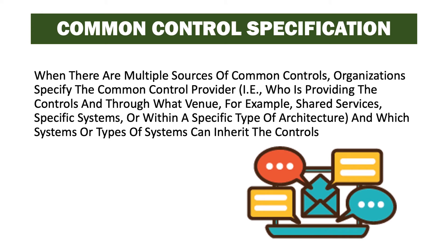When there are multiple sources of common controls, organizations specify the common control provider — that is, who is providing the controls, through what venue such as shared services, specific systems, or a specific type of architecture — and which systems or types of controls can inherit their controls. In the Los Angeles office, it would be specified that physical security controls must be inherited from the local common control provider, which is the physical security department in Los Angeles. That alleviates any confusion about where these controls would be inherited from.